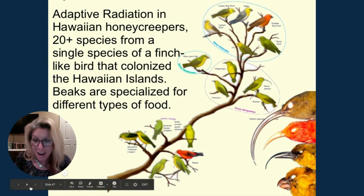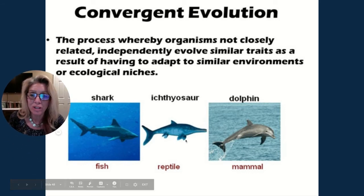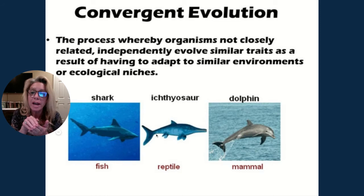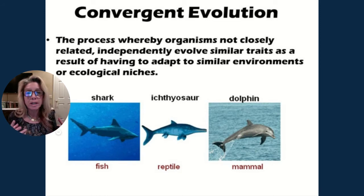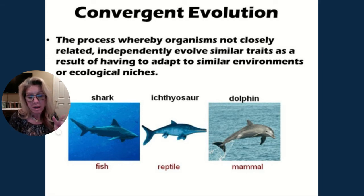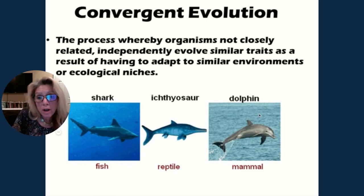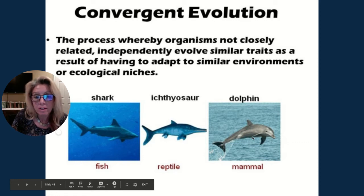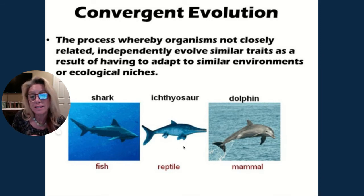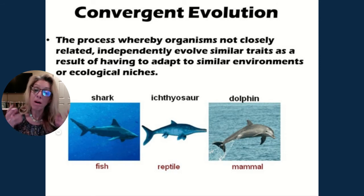Convergent evolution does not mean species are related; they're dealing with their environment in the same way. Whether you're a fish, reptile, or mammal, if you're moving through water a streamlined body with fins is advantageous — not closely related, but evolving similar traits. Convergent evolution occurs when biological traits evolve in unrelated species as a result of exposure to similar environments. Think analogous structures: a fish fin and a mammal fin have similar function but very different anatomy — the mammal has humerus, radius, ulna, carpals, metacarpals, and phalanges.